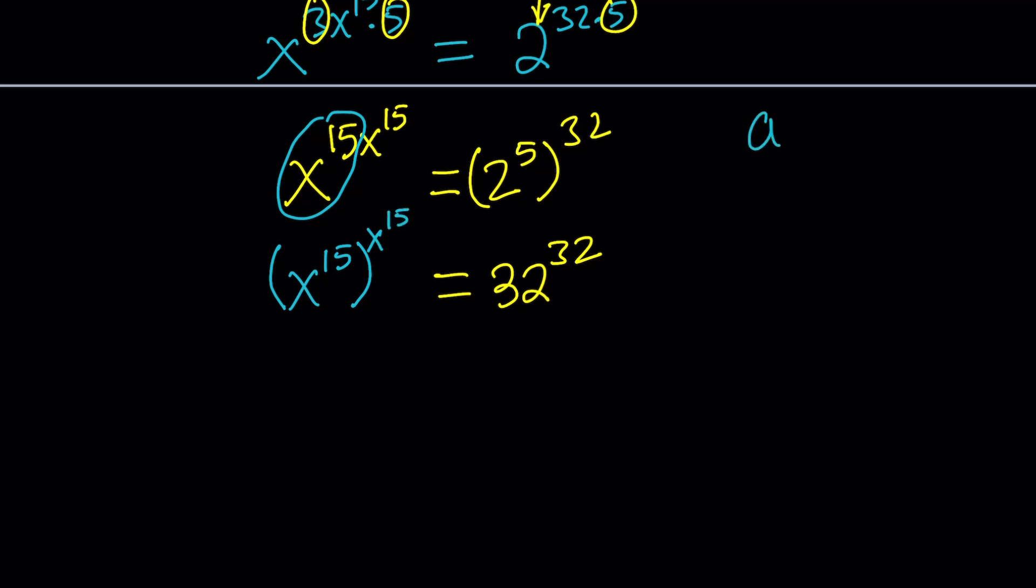In other words, whenever we have a to the power bc, we can write it as a to the power b to the c. Make sense? Yes, we can take b inside. You can also take the c inside, because b and c are interchangeable, because they're being multiplied. Make sense?